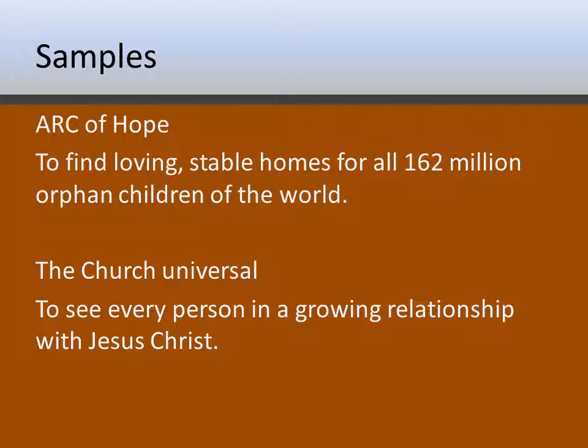For the Church Universal — and I'm talking about the capital-C Church here — that vision, just as an example, is to see every person in a growing relationship with Jesus Christ. Because if every person is in a relationship with Jesus Christ, there is no more work for the Church to do except to continue to glorify God. The vision is basically what heaven is going to be like — everybody who has come to Christ already has, and now we're spending eternity giving glory and praise to our Creator.